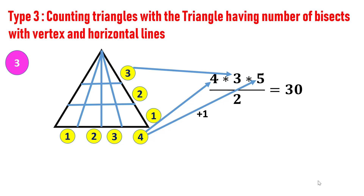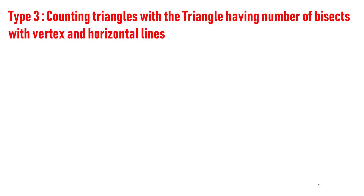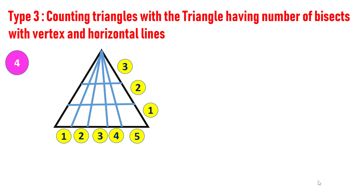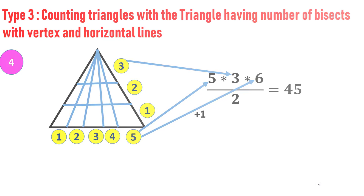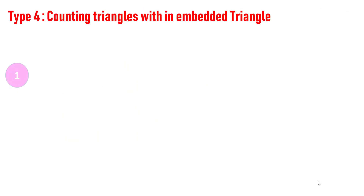Let's consider one more complex figure. Here, the number of horizontal parts is five and the number of vertical parts is three. Multiply along with one more than the horizontal parts: five into three into six, which yields 90. Divide by two, which yields 45. There are 45 triangles in this figure. That's all in type three.